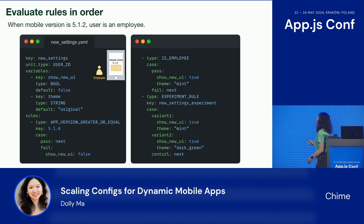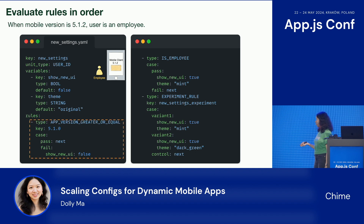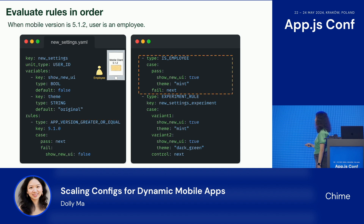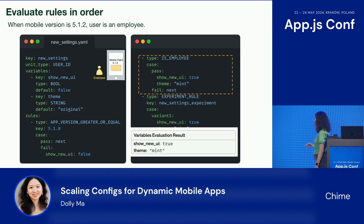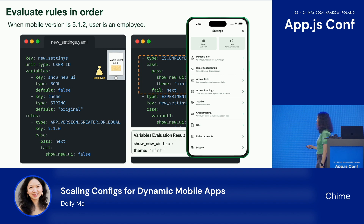Second example: when the mobile version is 5.1.2 and the user is an employee. The first rule is the app version rule — now we are larger than 5.1.0, so pass. Next is the is employee rule — the user is an employee, so pass. We come to the final evaluation: show new UI is true, theme is mint. And this is the UI to show.